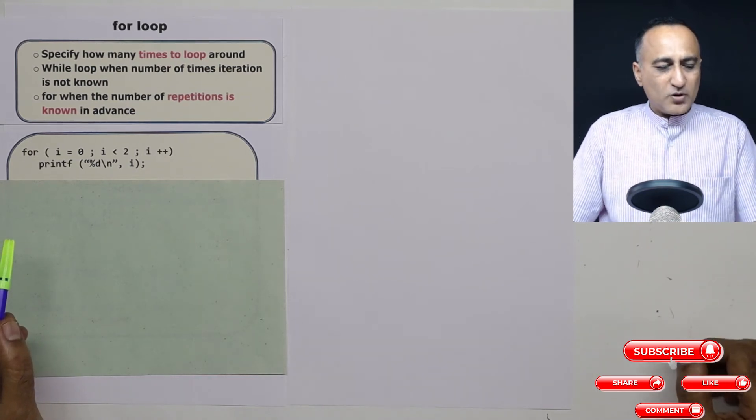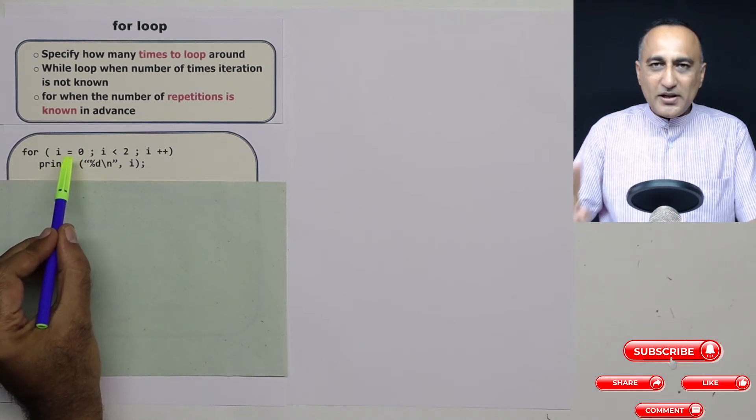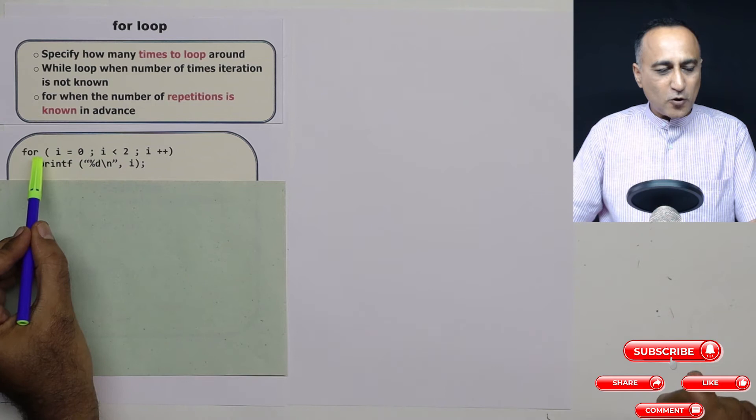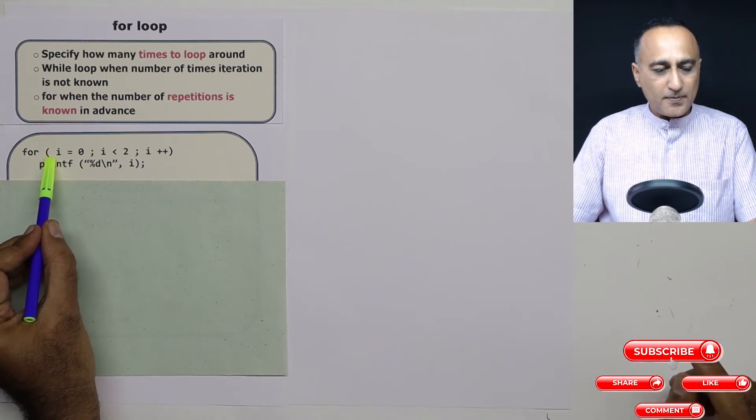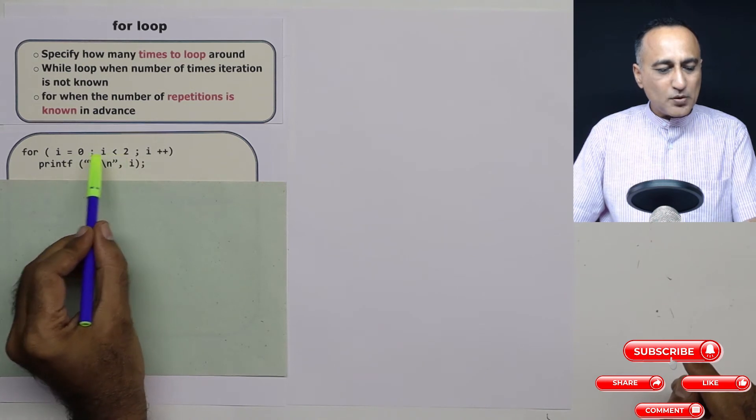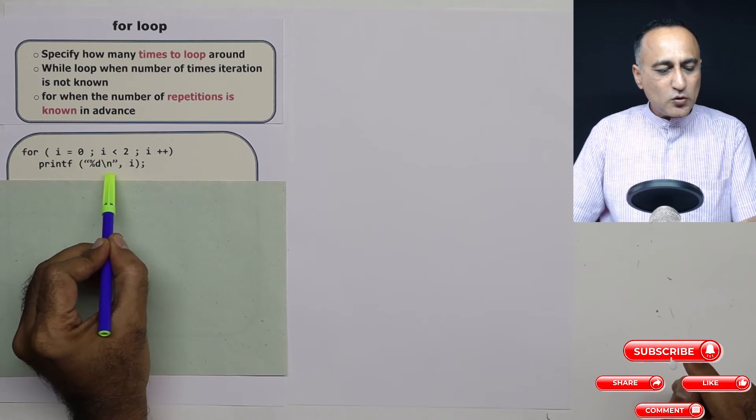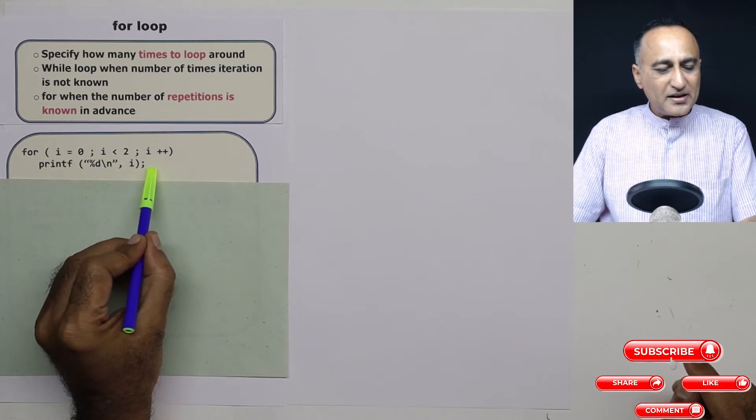Now, the way a for loop works is, it will do this assignment i equals zero only once that is the first time the for loop is instructed or called. After the initialization, it will straight away then check whether i is less than two. In this case, since zero is less than two, it will come and execute the printf. So it will print zero here.